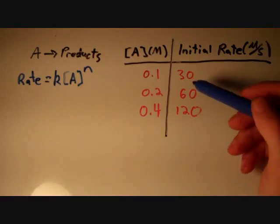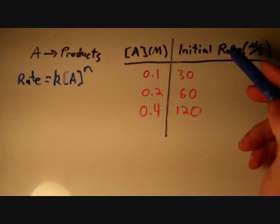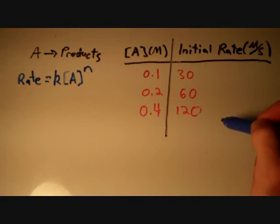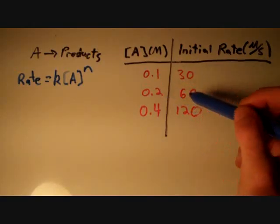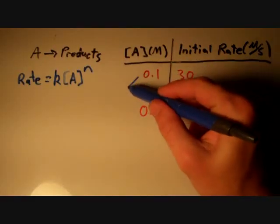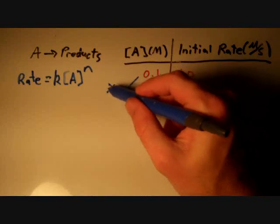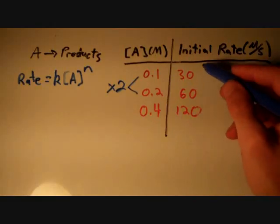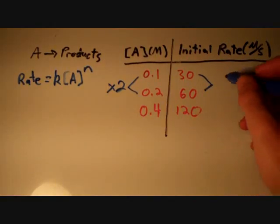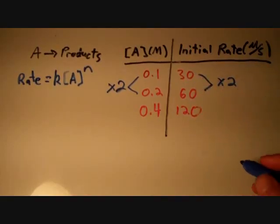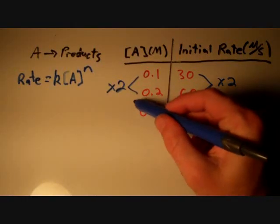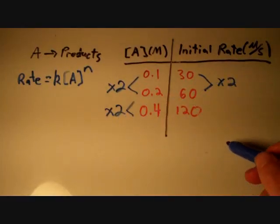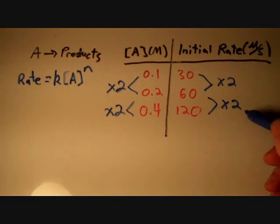We're going to see how the concentration changes and how the initial rate changes to draw conclusions. In the first two experiments, we have 0.1 molar and 0.2 molar — the concentration is multiplied by 2. The initial rate is also doubling: 30 times 2 equals 60. Looking at the second and third experiments, 0.2 doubles to 0.4 — again times 2 — and 60 doubles to 120.